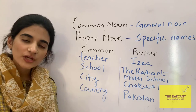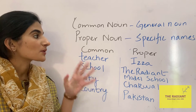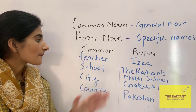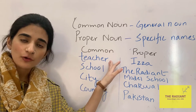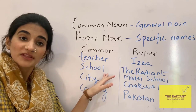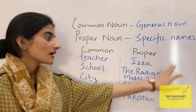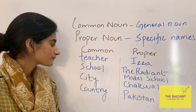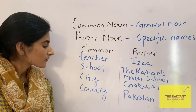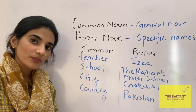A common noun is a general noun — any name, place, animal or thing. But a proper noun includes specific names. For example, a teacher is a common noun, but Isa is a proper noun. A school is a common noun, but Radiant Model School is a proper noun. A city is a common noun, but Chakwal is a proper noun. A country is a common noun, but Pakistan is a proper noun.